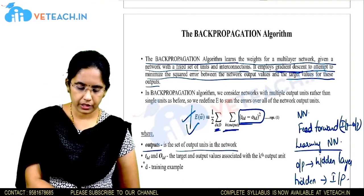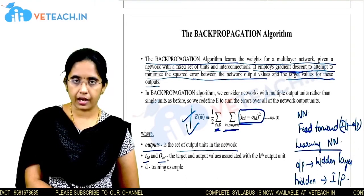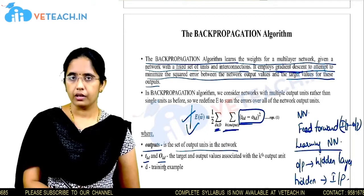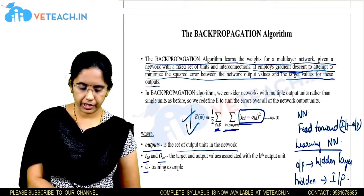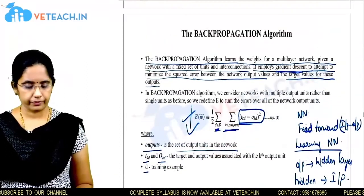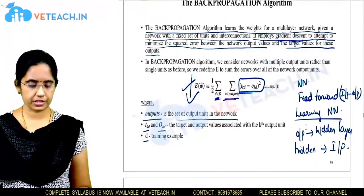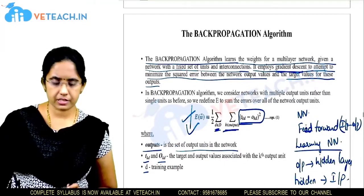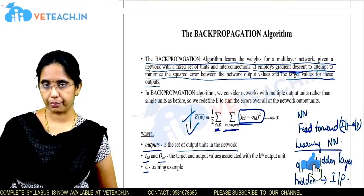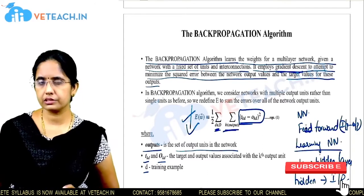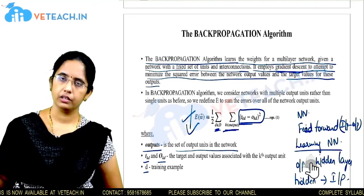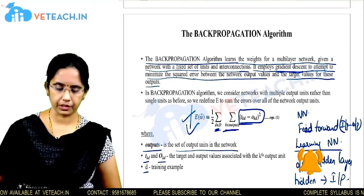Here, tkd is the target output value and okd is the predicted output value, where d represents the training example. Our intention is to reduce this error through the back propagation process. This concludes the discussion on multi-layer neural networks and back propagation. Next we will work through an example on the back propagation algorithm.